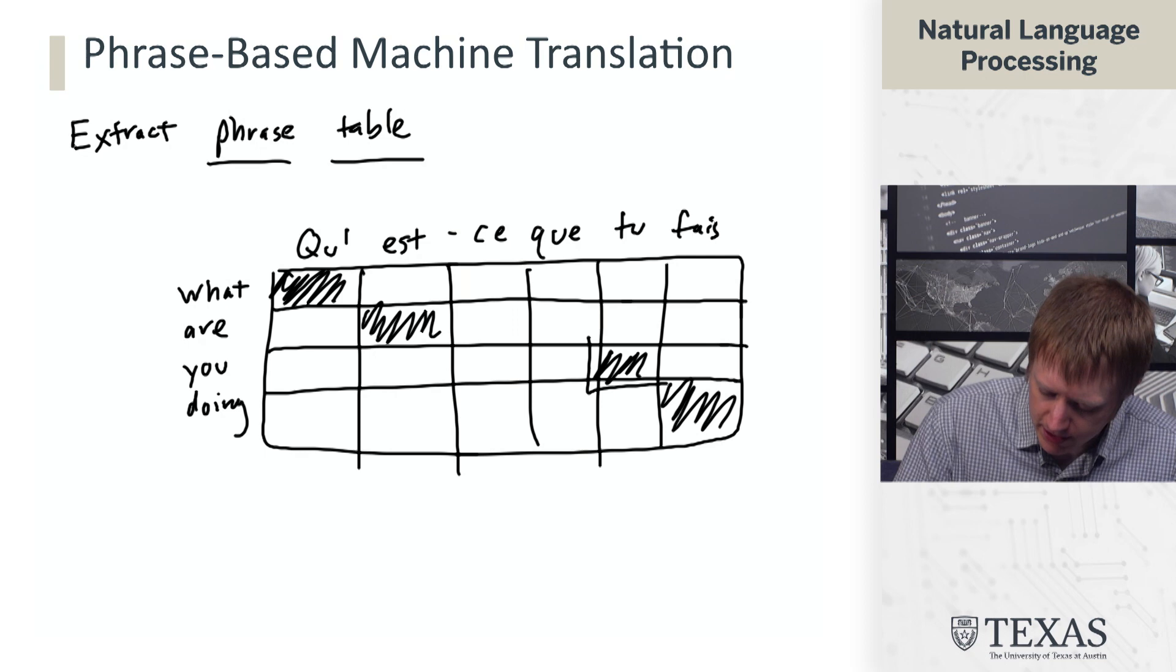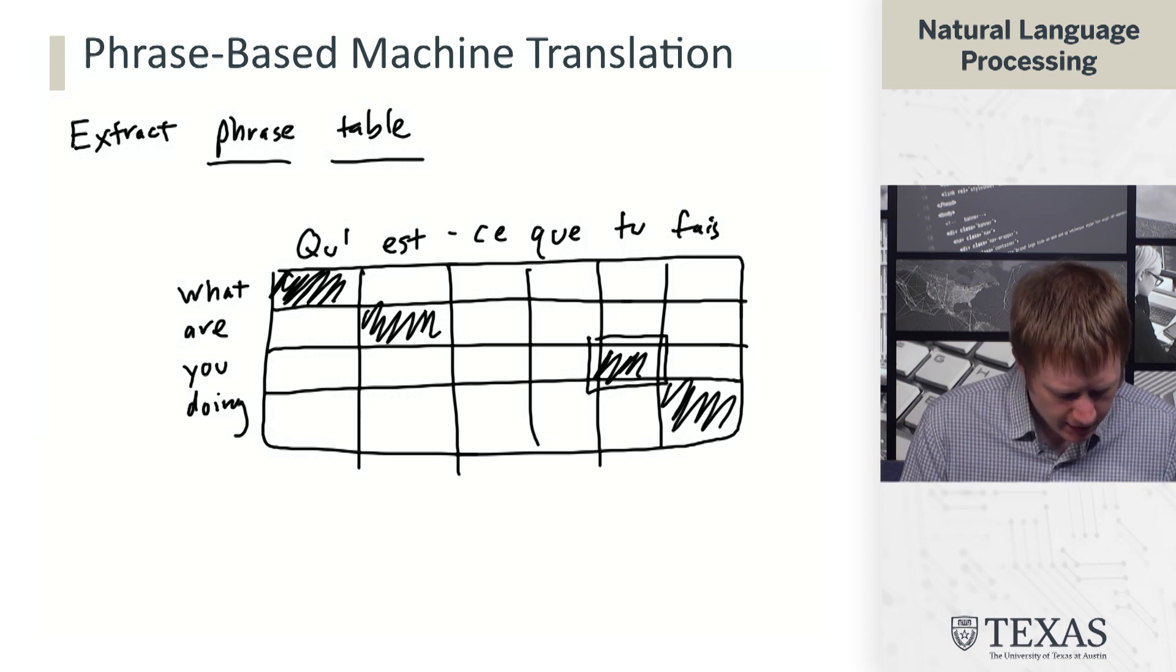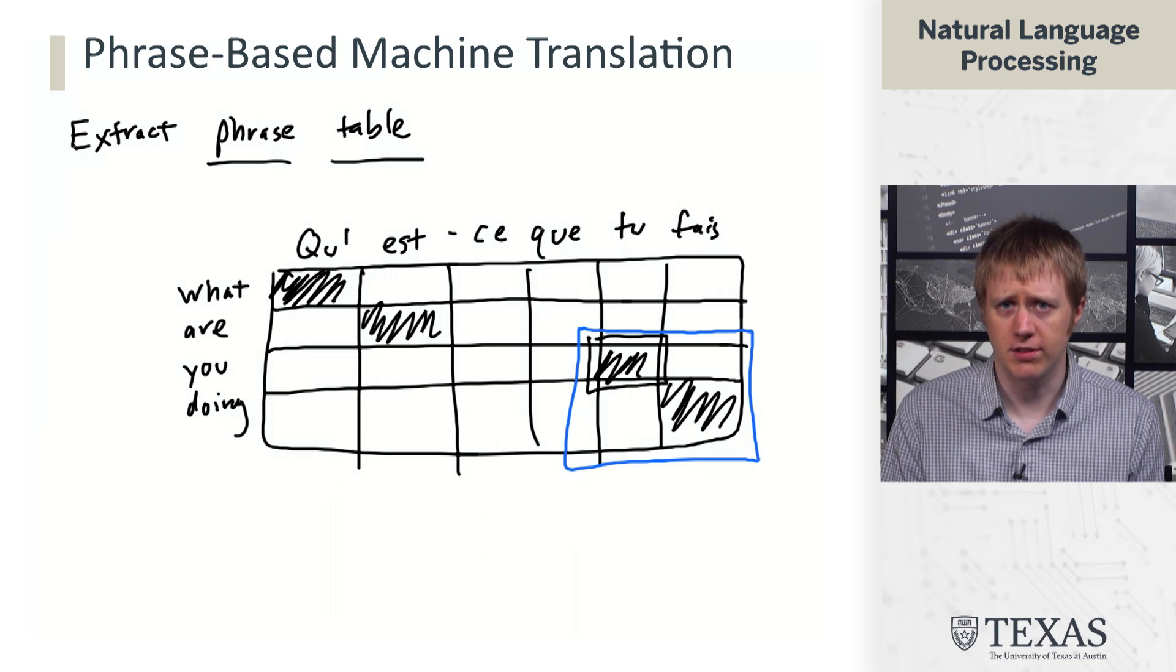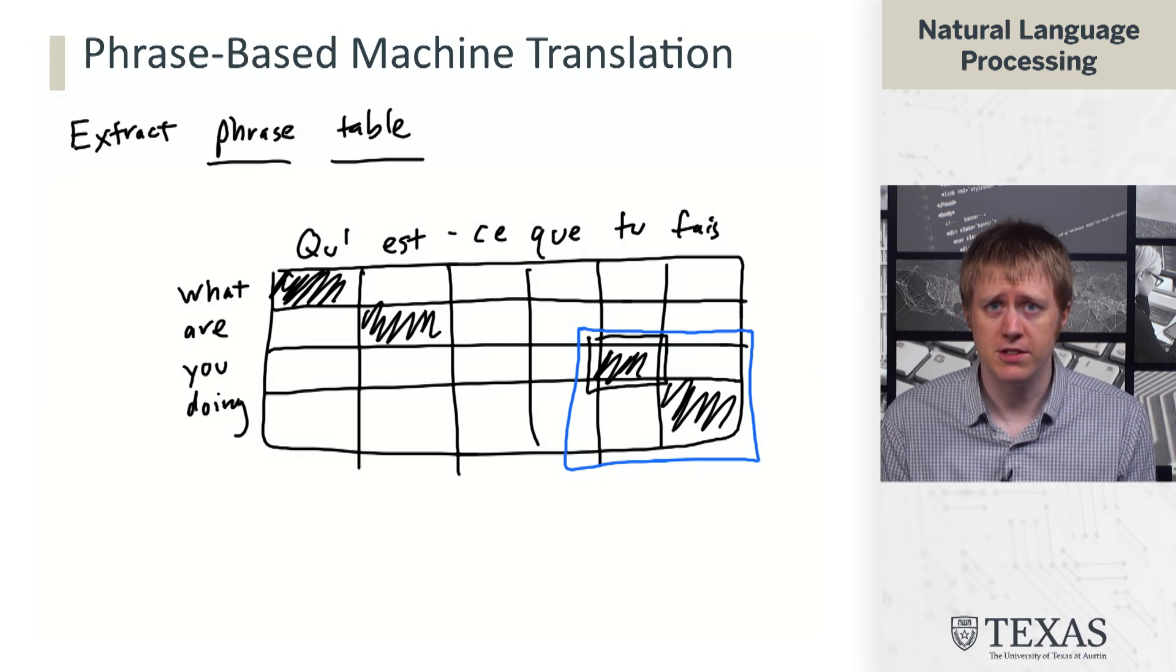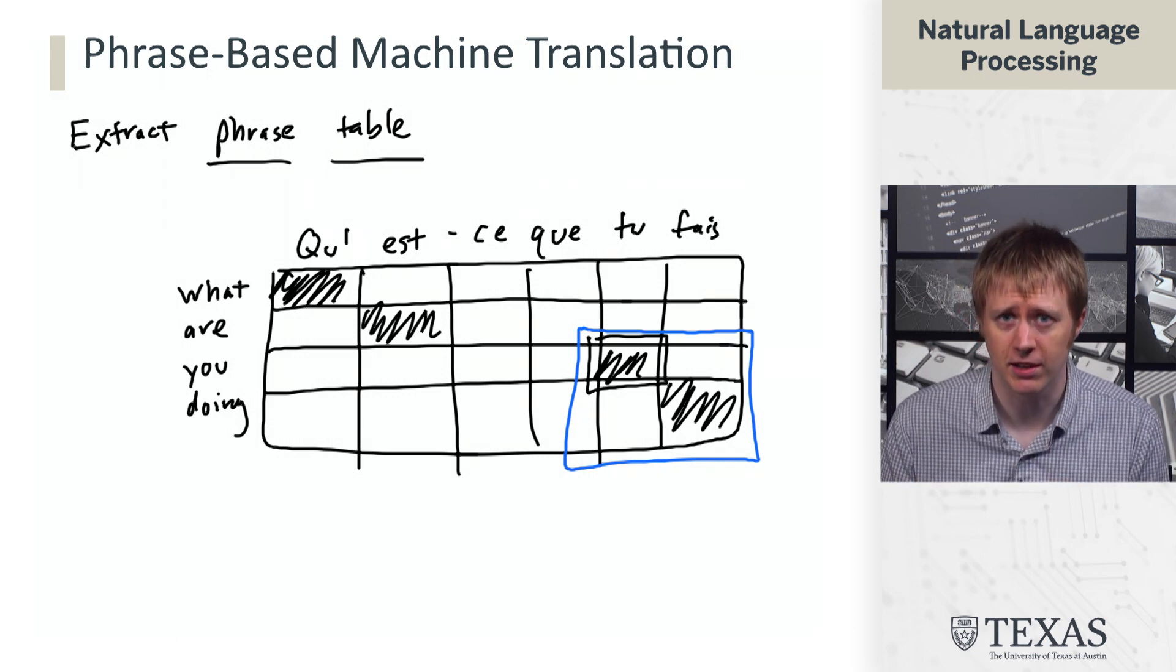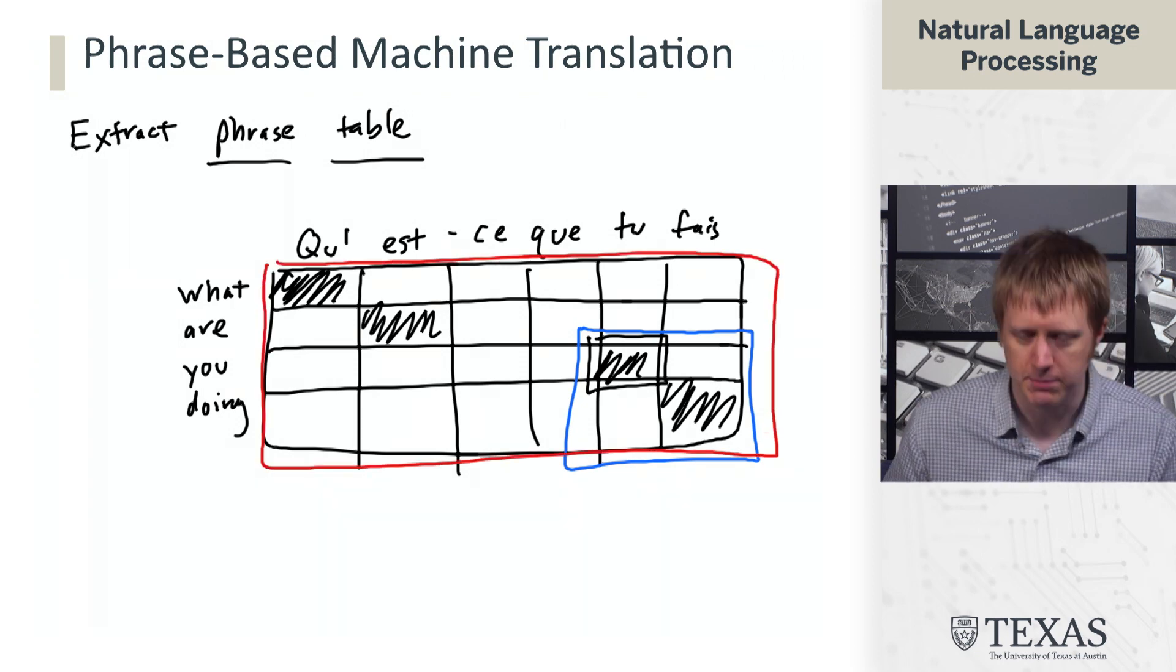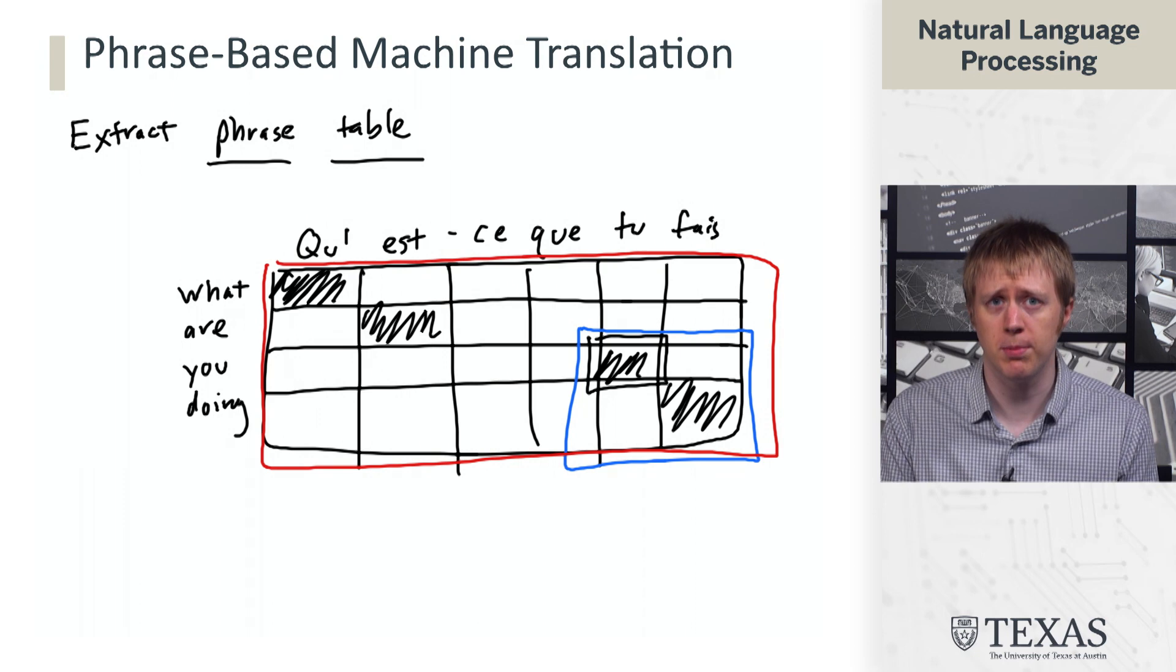But what it does tell us is that to and you are likely translations of each other. And it also tells us something more. It tells us that we have kind of two words here that align in this block. So tufei and you doing seem like they should be translations of each other. This is an okay assumption in this case. But regardless, what we're going to do is we're basically going to go through our data and draw these kind of boxes in our alignment grids. And this will give us a set of phrase translations, which we can associate with particular scores based on how often they show up.